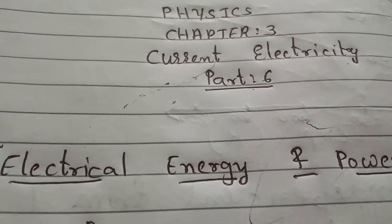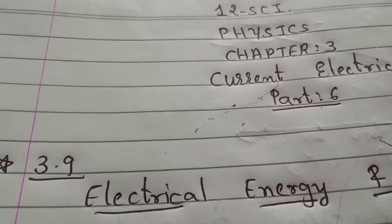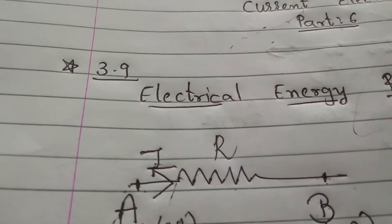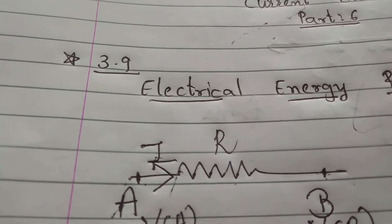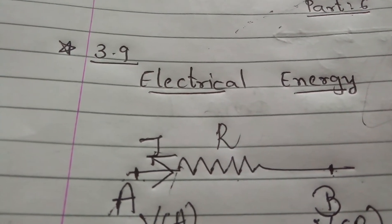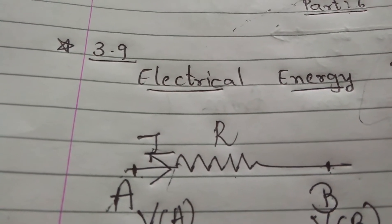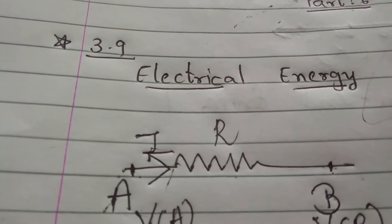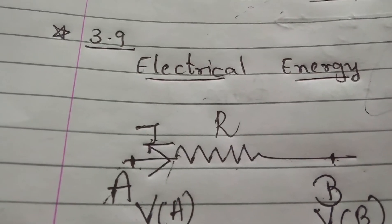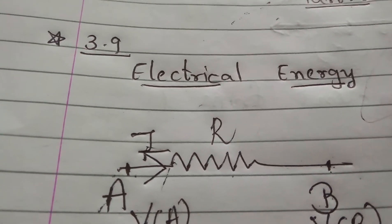Before discussing about power, first of all we need to know about electrical energy. For this, just concentrate on the figure shown to you. In the figure, a conductor of resistance R is shown. One end of the resistance is known as A and the other end is known as B. Current is flowing through this resistance from A to B, as shown in the figure.